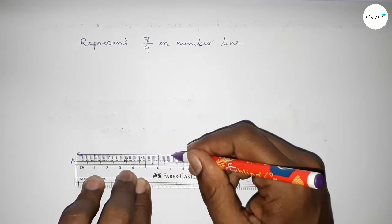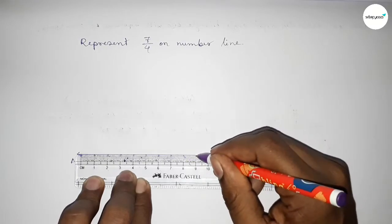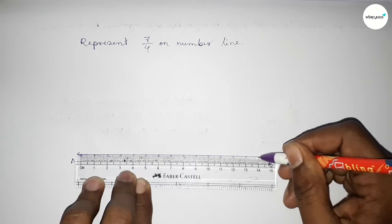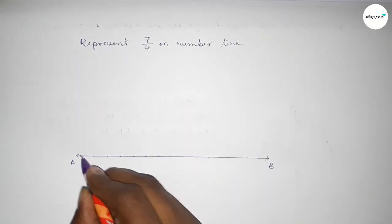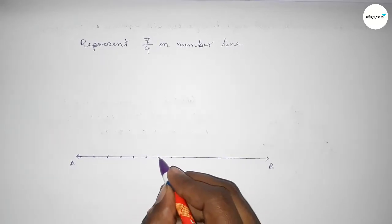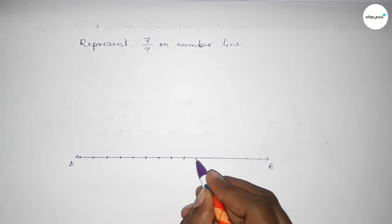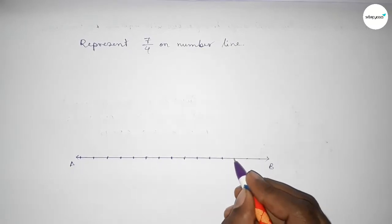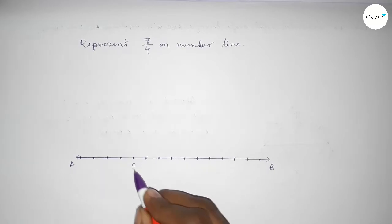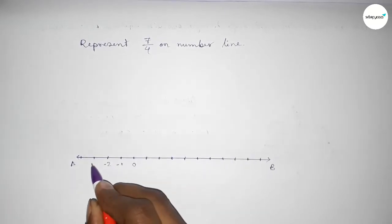Mark the numbers with deep color to understand perfectly. First of all, we have to draw a number line. Taking the starting number 0, minus 1, minus 2, minus 3, minus 4.